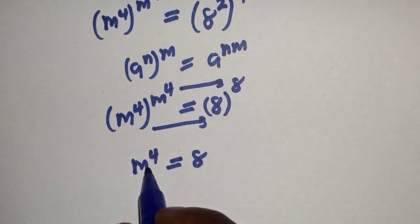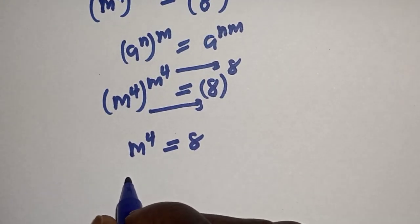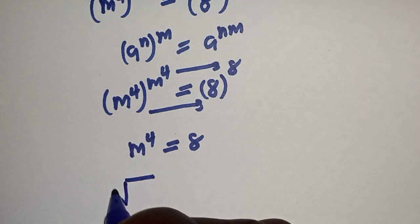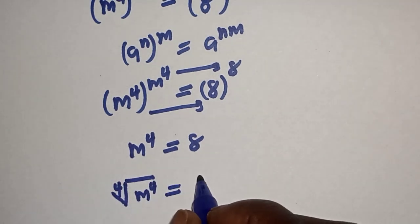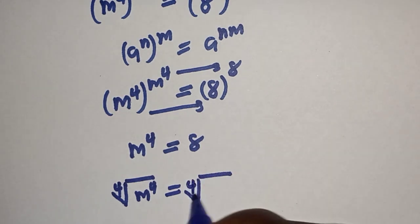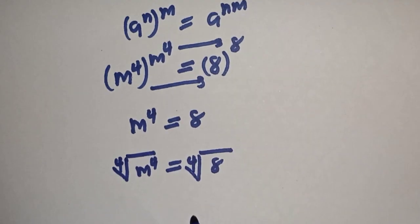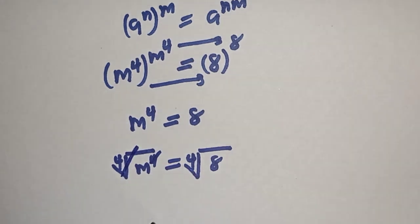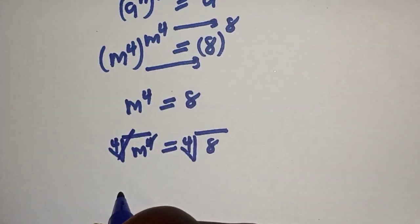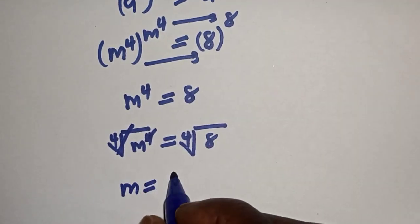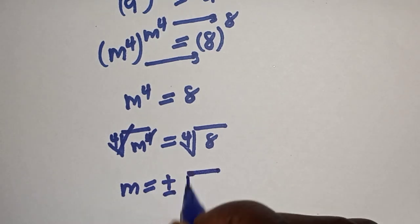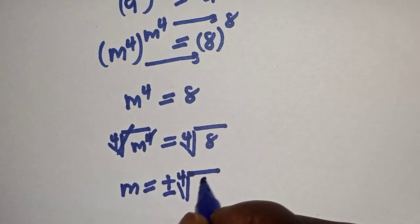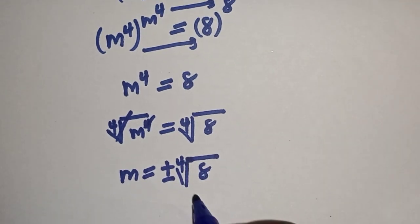Then let's take the fourth root of both sides. The fourth root of m raised to power 4 is equal to the fourth root of 8. The m raised to the 4 and the fourth root cancel, leaving m equal to plus or minus the fourth root of 8.